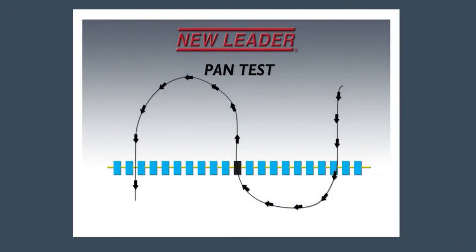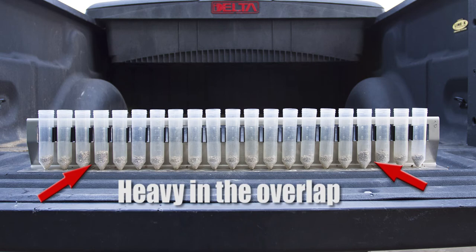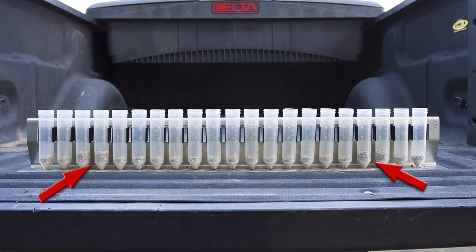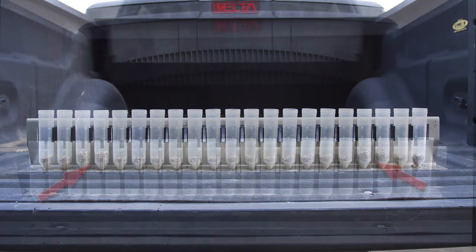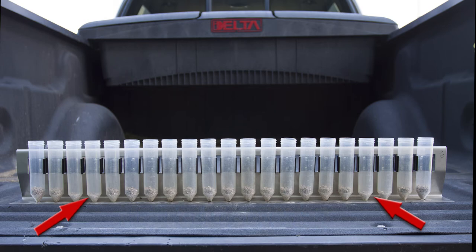Now that an overall swath width has been determined, perform a triple pass to confirm the spread pattern overlap. If a triple pass shows the pattern is heavy in the overlap area, then you must either slow the spinner speed down to create a narrower swath width, or increase the distance between the driving centers. If the triple pass shows the pattern is light in the overlap area, then you must either increase the spinner speed to create a wider swath width, or decrease the distance between the driving centers.